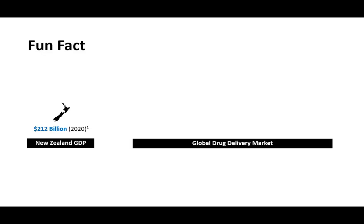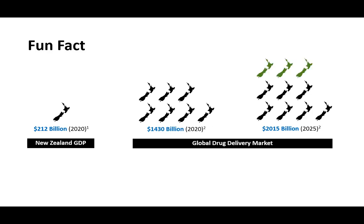The GDP of New Zealand in 2020 was $212 billion. The global drug delivery market in 2020 was $1,430 billion, roughly 7 times the GDP of New Zealand. It's forecasted by 2025 this would be roughly 10 times the GDP of New Zealand. So should New Zealand be missing out? Certainly not.